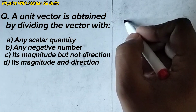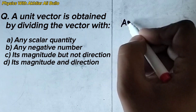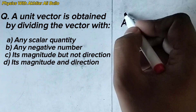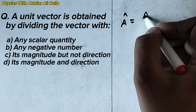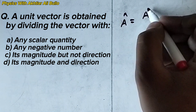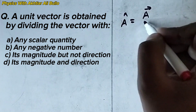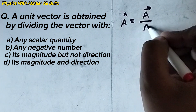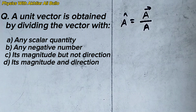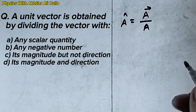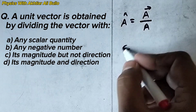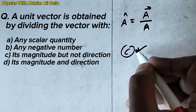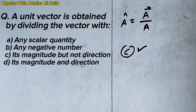A unit vector is obtained by dividing a vector with its magnitude only. So the correct option will be c — its magnitude but not direction.